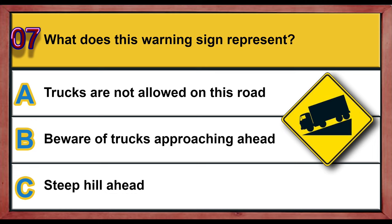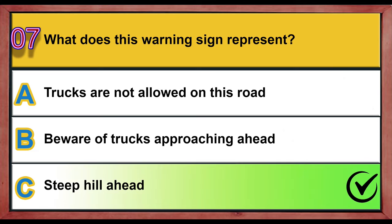Question 7. What does this warning sign represent? A. Trucks are not allowed on this road. B. Beware of trucks approaching ahead. C. Steep hill ahead. Correct answer is C: Steep hill ahead.